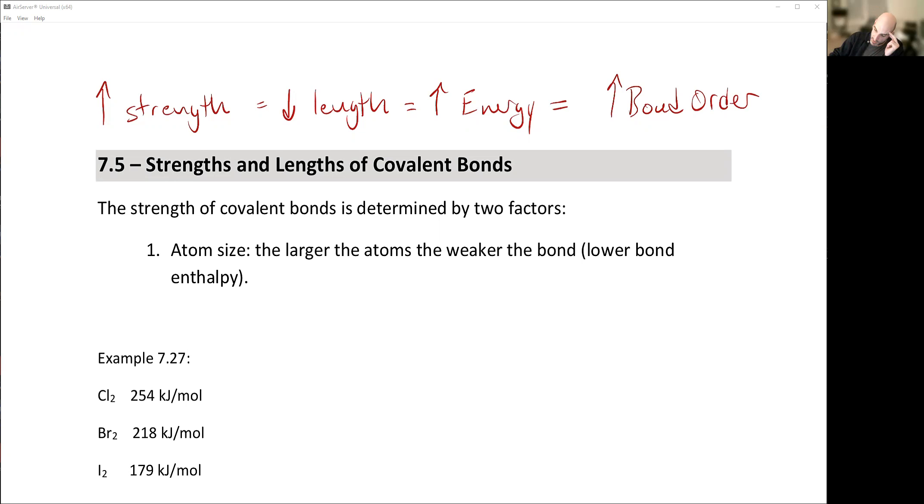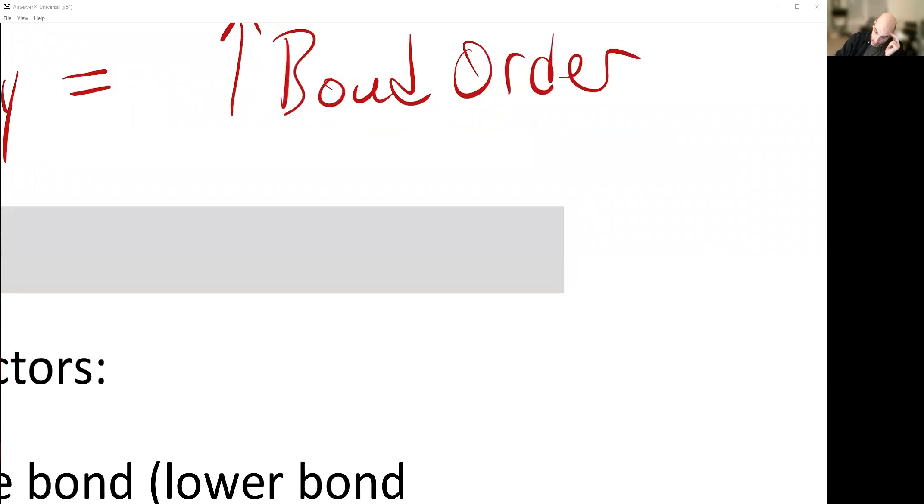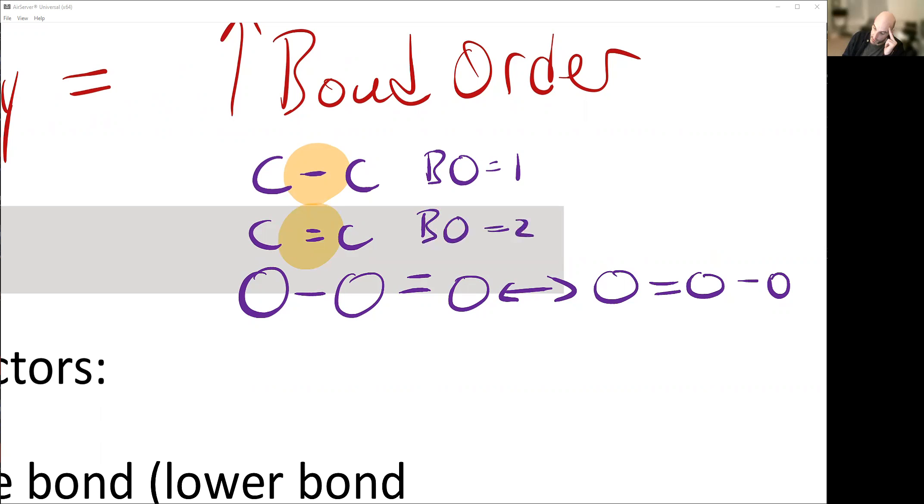Bond order, just in case you forgot. Carbon, carbon, carbon double bond carbon. Actually we'll do oxygen. Ozone, for example, with the resonance structures. So if I look at this bond right here, this has a bond order equal to one. This right here has a bond order equal to two.